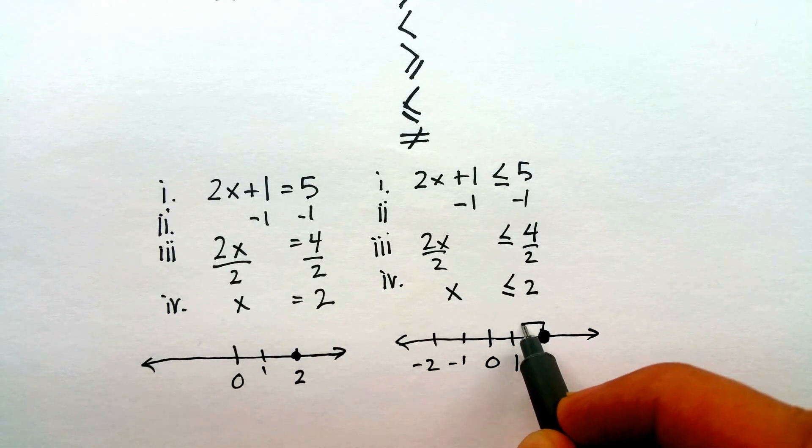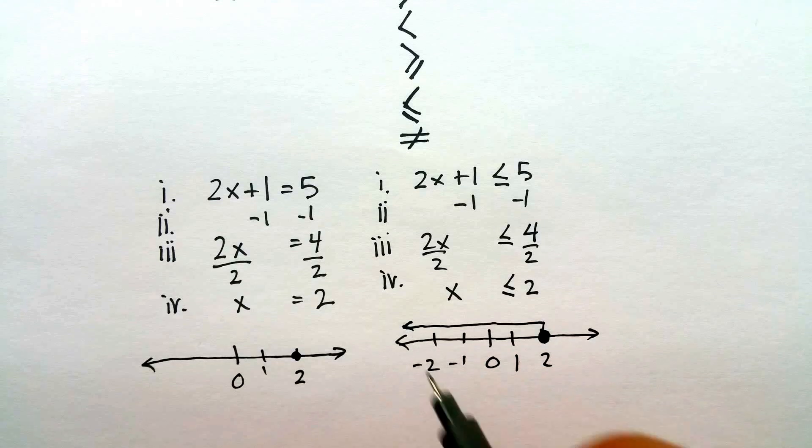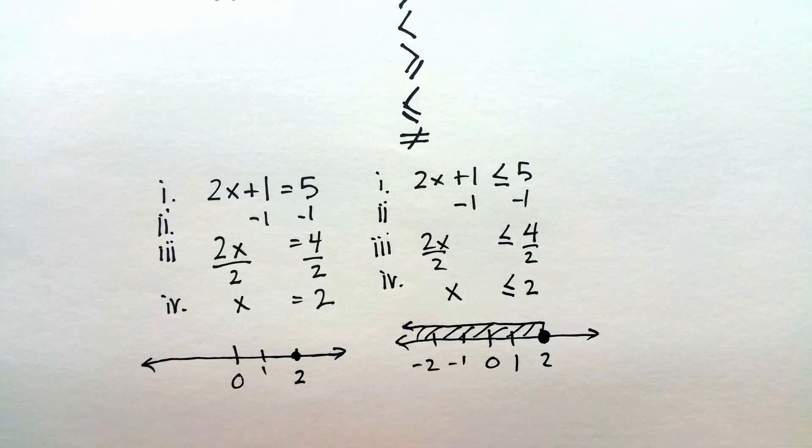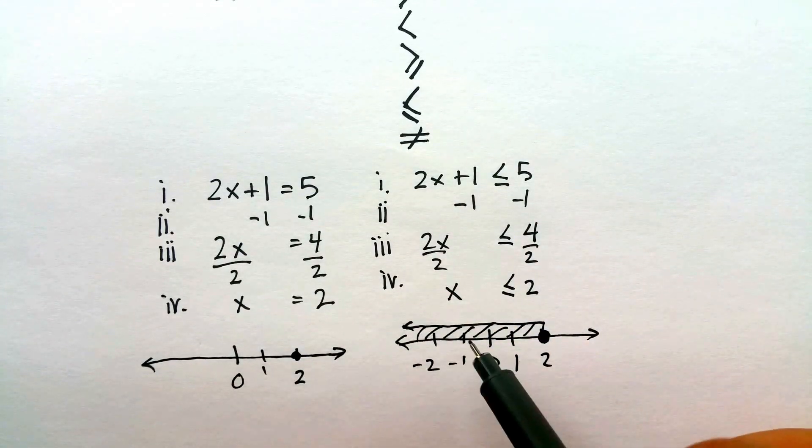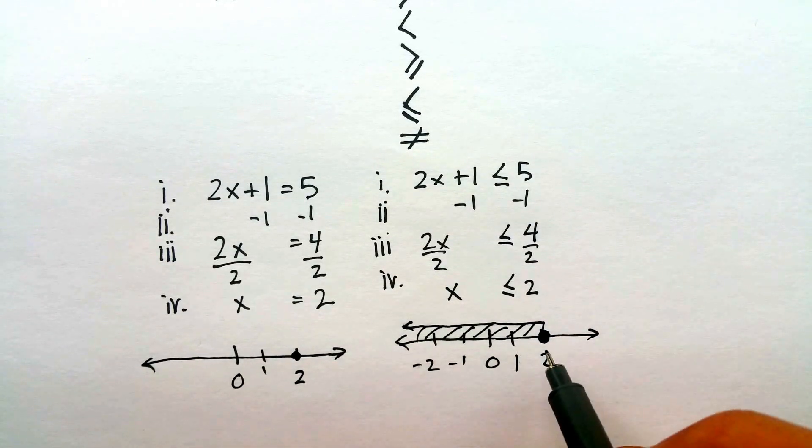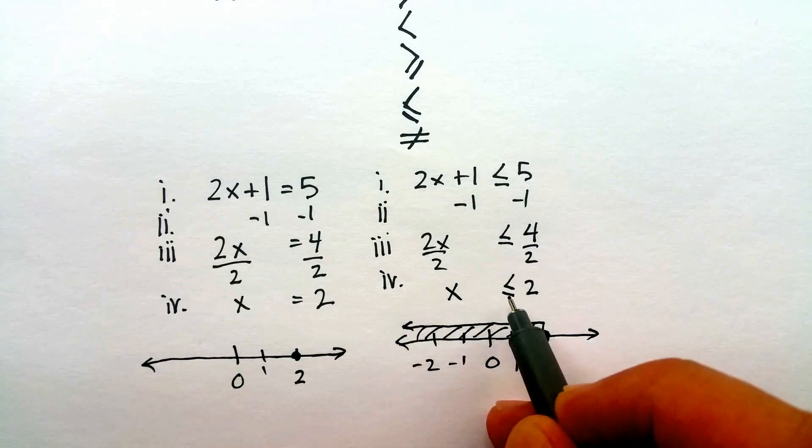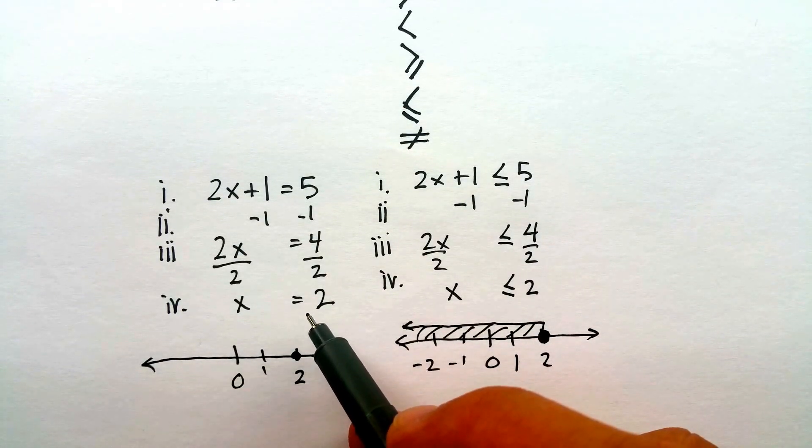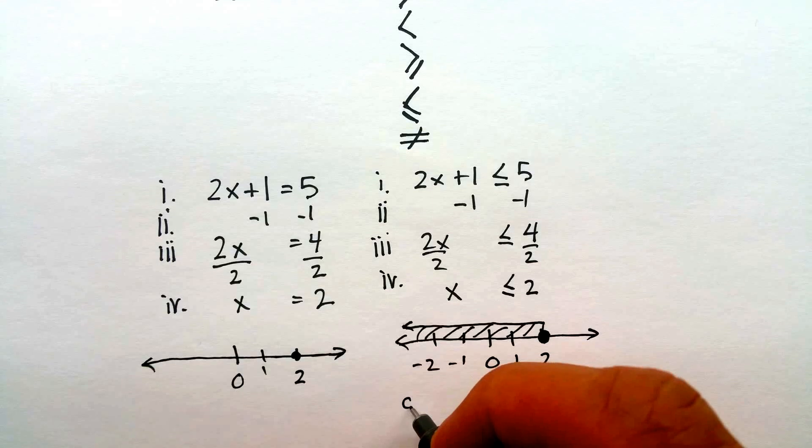So what I'm going to do is I'm going to color it in in that direction. You can see the difference between the two answers, right? This is going to include any point that is going to be equal to 2 but also less than, and this one is going to be only equal to 2. Now how would I just check this?